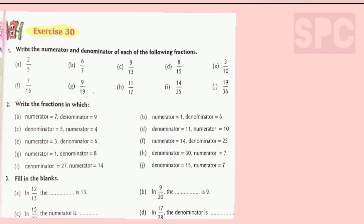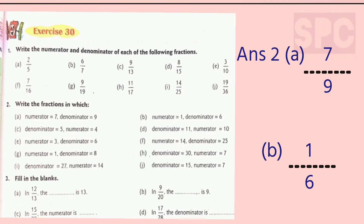Let's move on to question number 2: Write the fraction in which the numerator is equal to this and denominator is equal to this. Now children, in this question the numerators and denominators are given and we have to formulate the fraction according to the given numerals. Let's start with part A — the numerator is 7 and the denominator is 9, so the fraction will be 7 by 9. Part B, numerator is 1 and the denominator is 6, so the fraction will be 1 by 6.